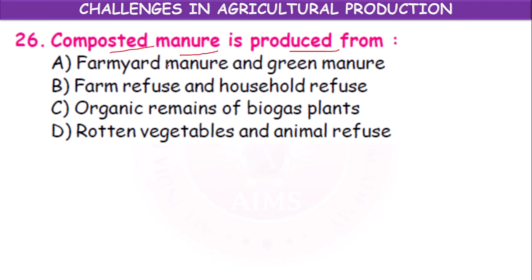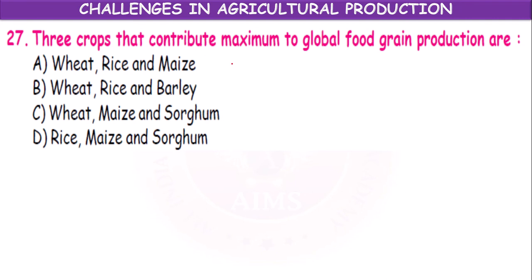Composted manure is produced from organic remains of a biogas plant. Three crops that contribute maximum to global food grain production — the options include wheat, rice and maize; wheat, rice and barley; wheat, maize and sorghum; or rice, maize and sorghum. The answer is wheat, rice, and maize (maize means corn).